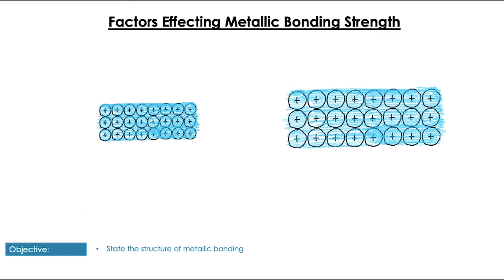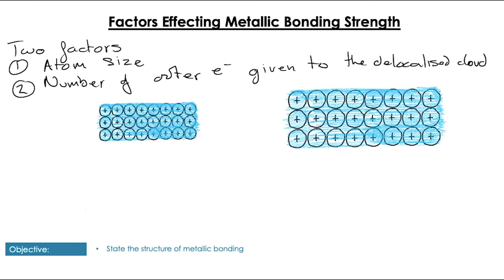So, a little bit more simple in structure than the covalent molecules we've been looking at. However, there are factors that affect the strength of this bond. So, there are two main factors. The first factor is the atom size. And the second factor is the number of outer electrons that are given to the delocalized cloud by the metal. So, looking at atom size, how is this going to affect the strength of this attraction?